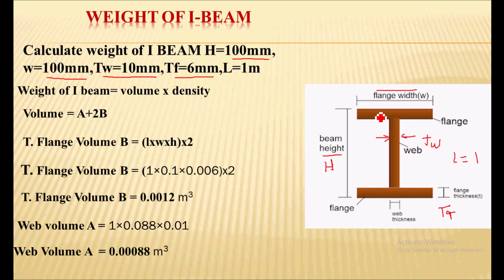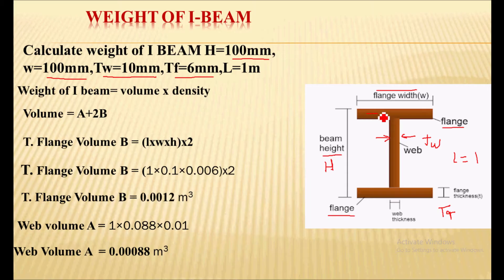In an I-beam there are two flanges. These flanges are the horizontal elements of the I-beam, while the web is the vertical element of the I-beam.